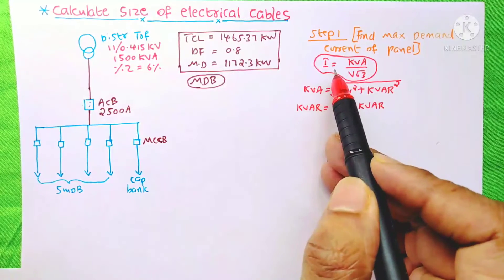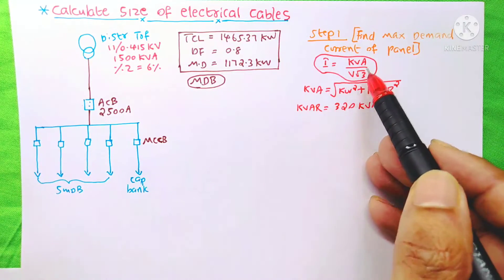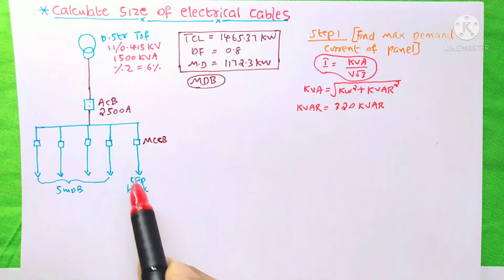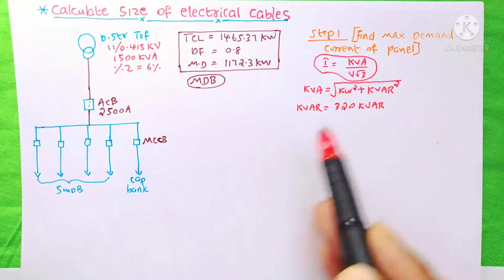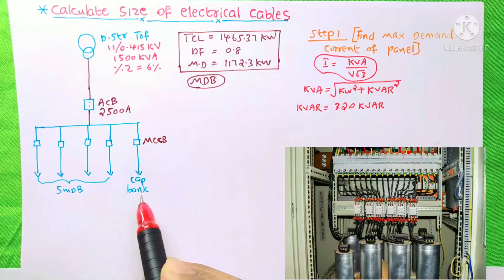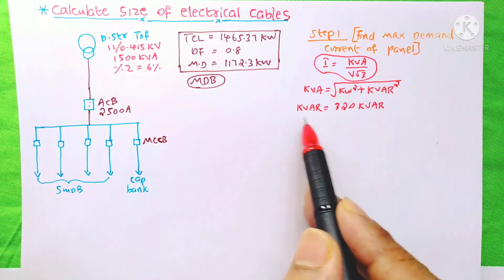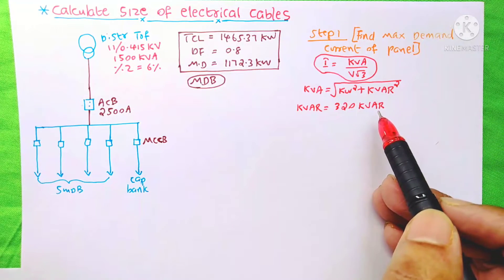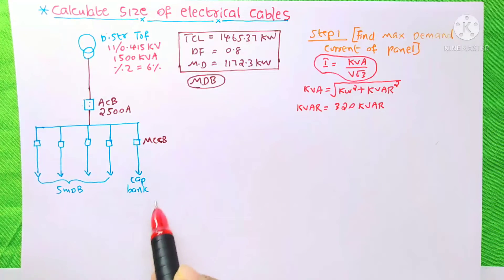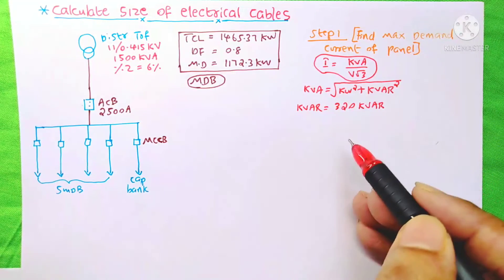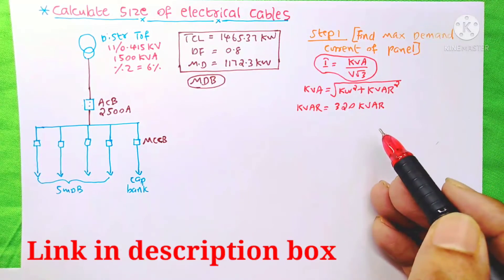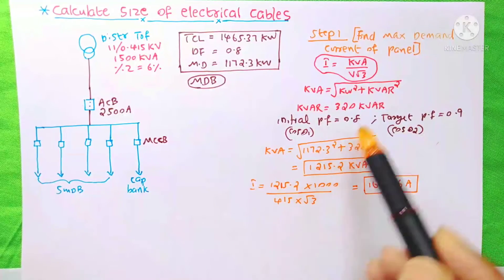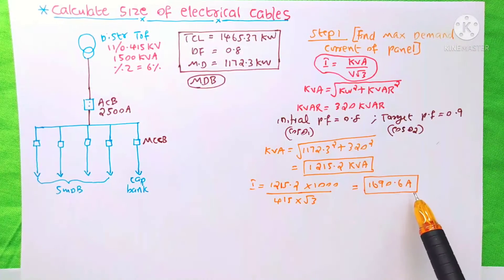The equation is: I = P / (V × √3), and here KVA = √(KW² + KVAR²), because for this MDB we have a capacitor bank, so to size this cable we need to consider the capacitor bank as well. The KVAR is equal to 320 KVAR. The answer is 1215.2 KVA, and substituting into the first equation, the answer is 1690.6 A.